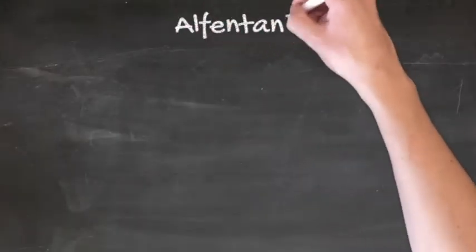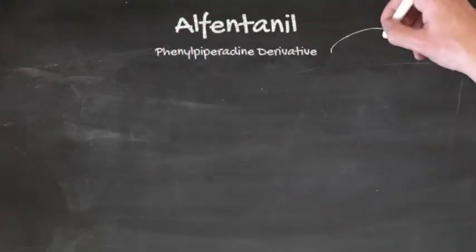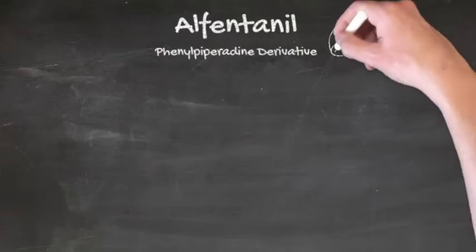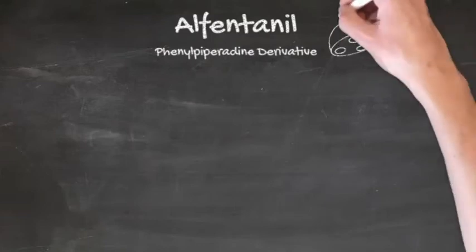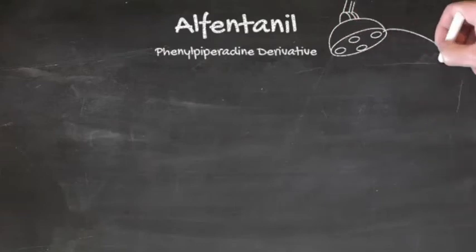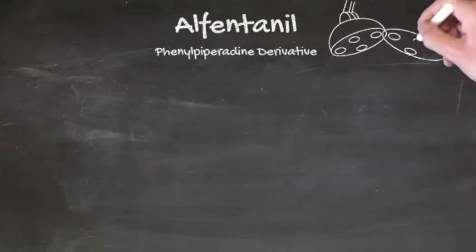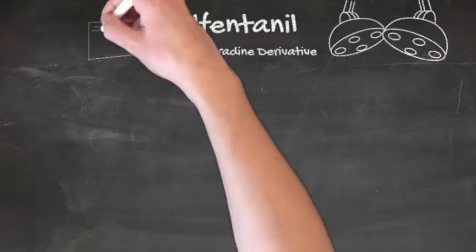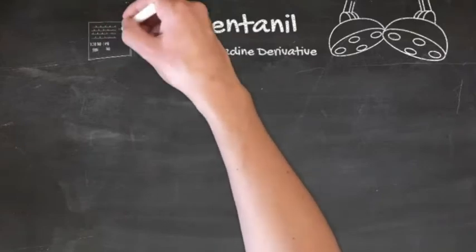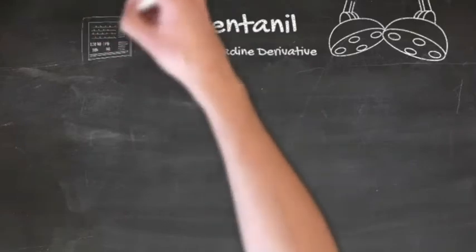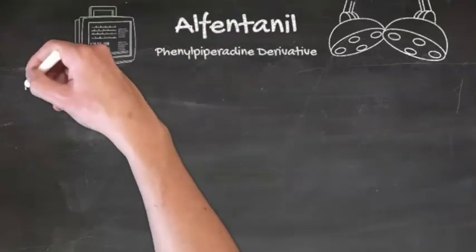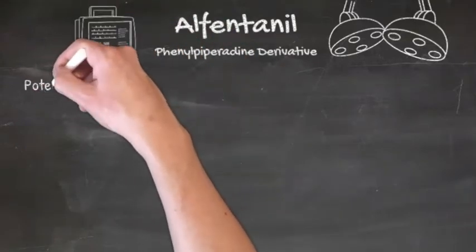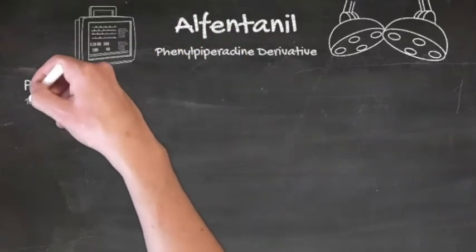Alfentanyl is another reasonably common drug used in anaesthetics, and it's worth being aware of its key differences to fentanyl. Like fentanyl, it's also a synthetic phenylpiperidine derivative, and it's an agonist at mu opioid receptors.